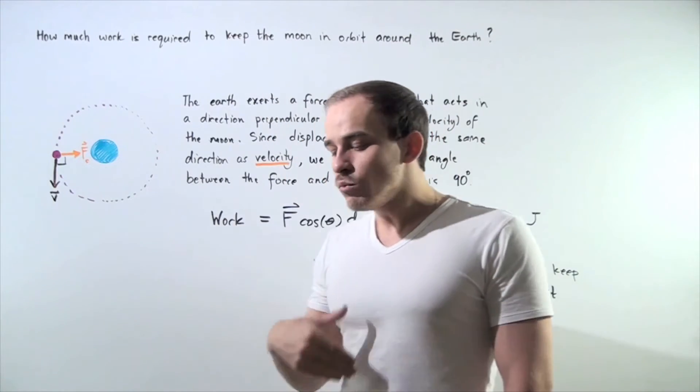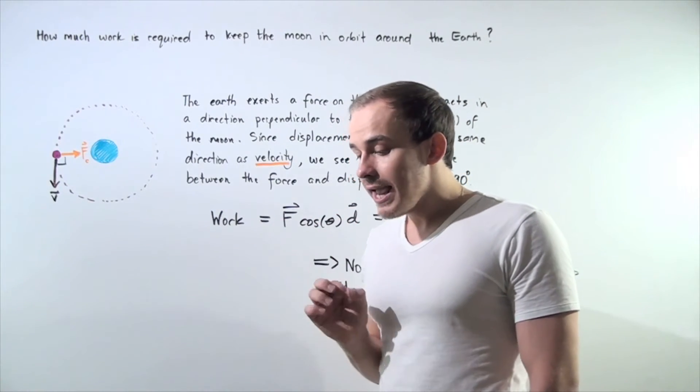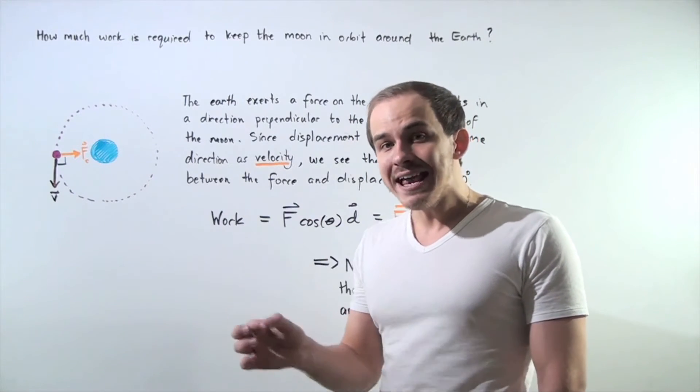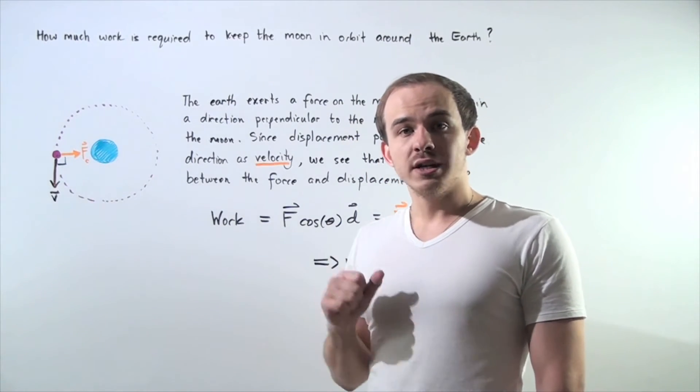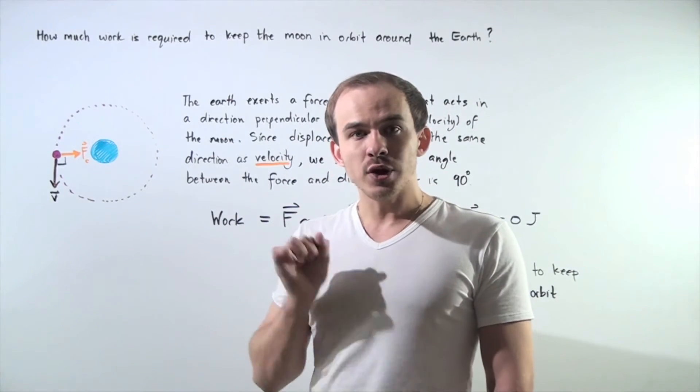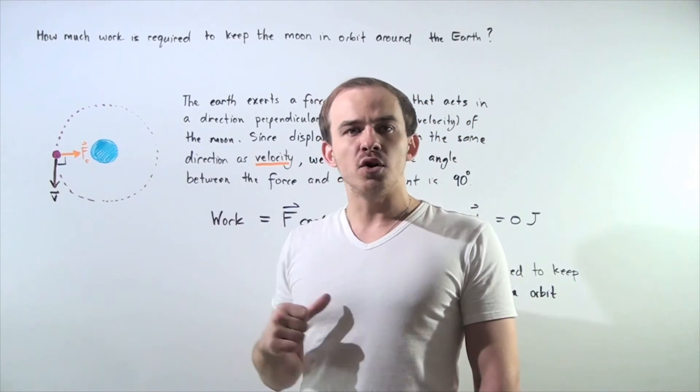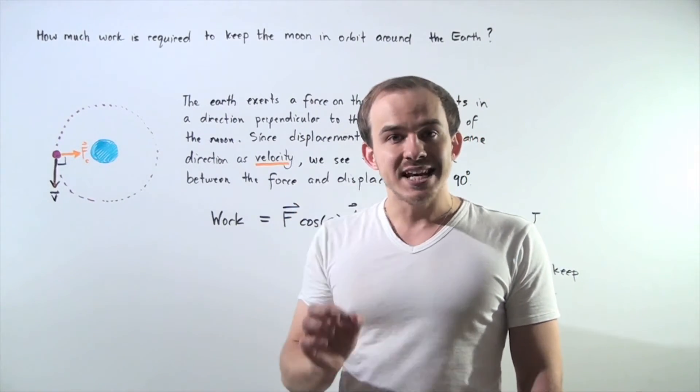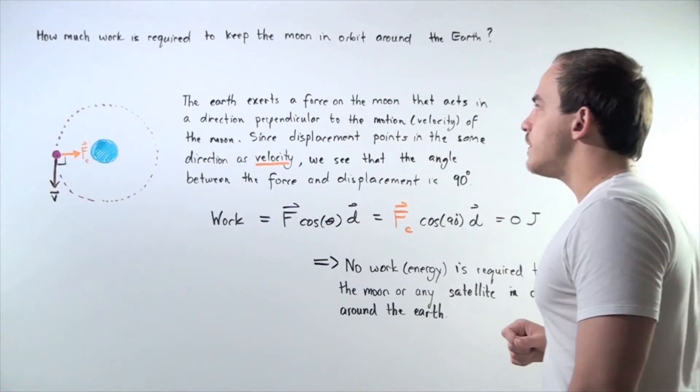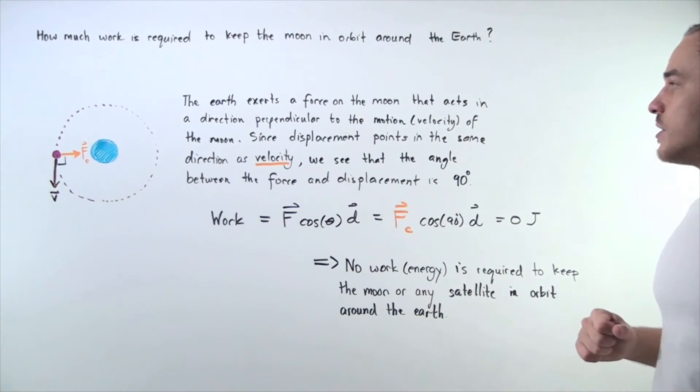Recall what our work is. The definition of work is you take the magnitude of the force that acts at an angle parallel to our displacement. Because in this case the angle is 90 degrees, we take the force multiplied by the cosine of 90 multiplied by displacement, and we get zero work. So once again, the earth exerts a force on the moon that acts in a direction perpendicular to the motion, to our velocity of the moon.